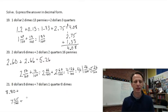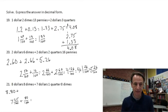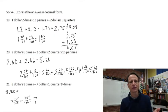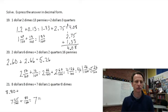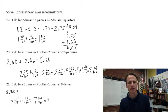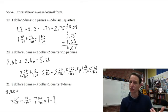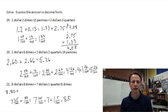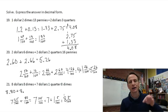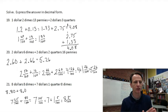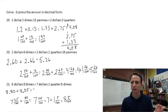Seven dollars, one quarter, and eight dimes: one quarter = 25 cents = 25/100. Eight dimes = 80 cents = 80/100. Put those together: 25 + 80 = 105 hundredths. 100 hundredths is one whole, leaving 5 hundredths. So 7 + 1 = 8 and 5 hundredths, written as 8.05 — the five goes in the hundredths place, zero in tenths.